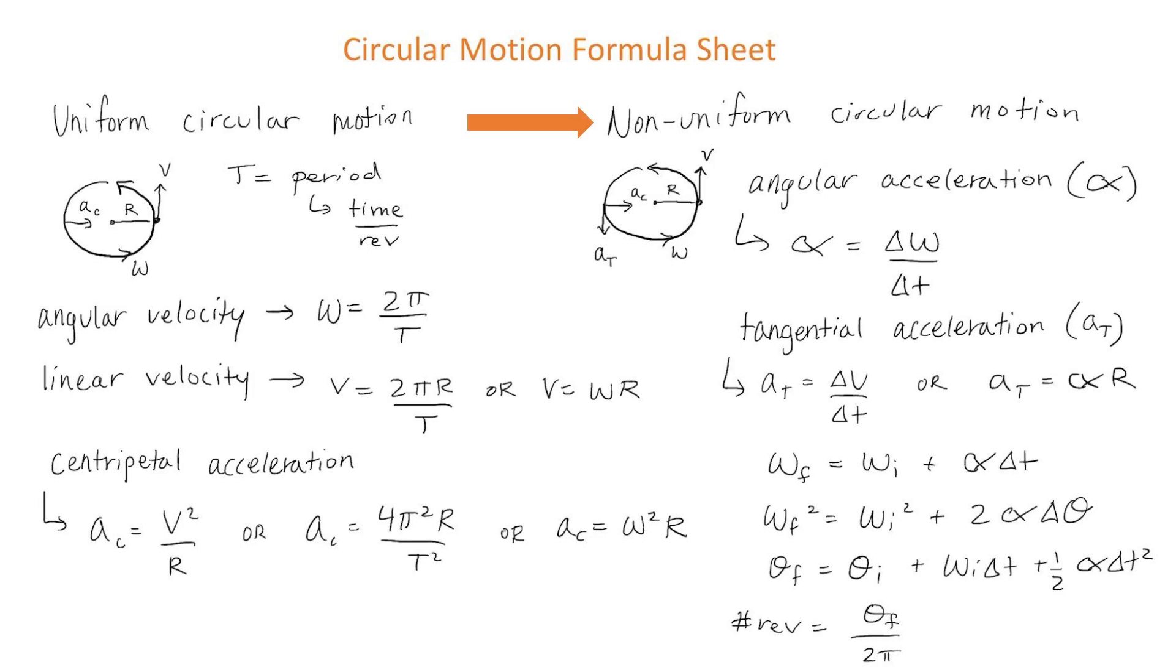Now let's look at non-uniform circular motion. In non-uniform circular motion, the object is moving in a circle but they're either speeding up or slowing down. We can describe three different types of acceleration.